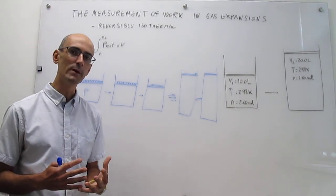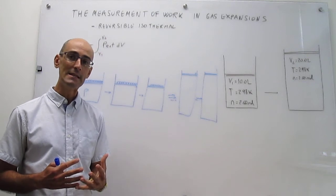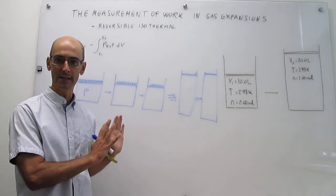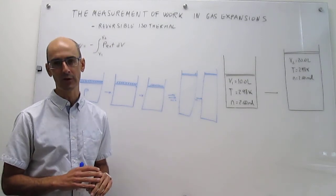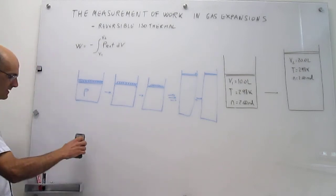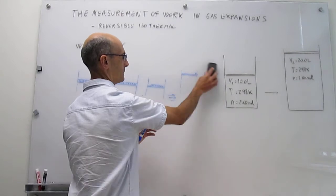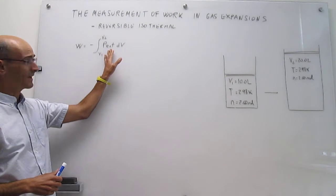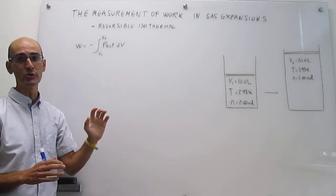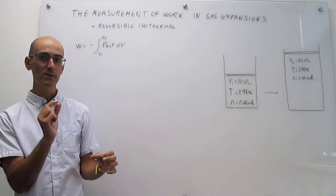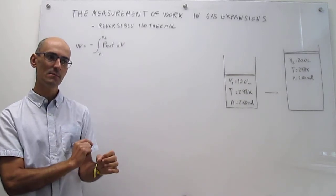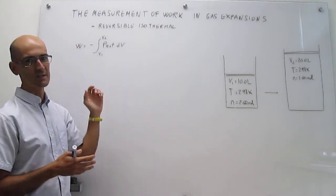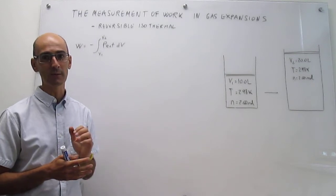Now that we understand what a reversible expansion is, we'll try to derive an equation to find this upper limit for the maximum work from a gas expansion. Something special about this expansion is that the external pressure is no longer constant — you're removing masses one at a time, so the pressure is changing continuously, becoming smaller and smaller. That means we're not going to be able to take it out of the integral.